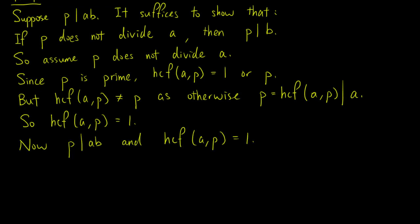Now we have p divides a times b, and the HCF of a and p is 1. From a result in the second video, we have that p divides b, which completes the proof.